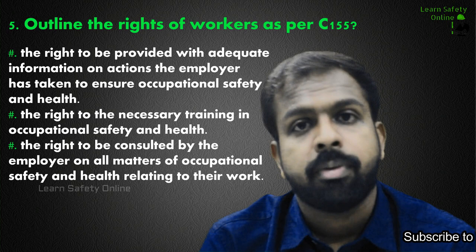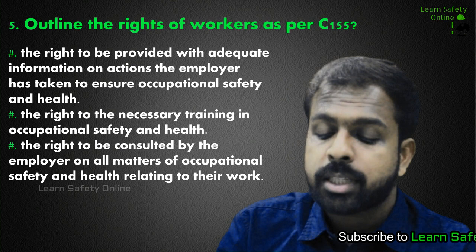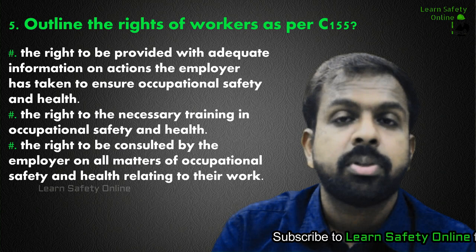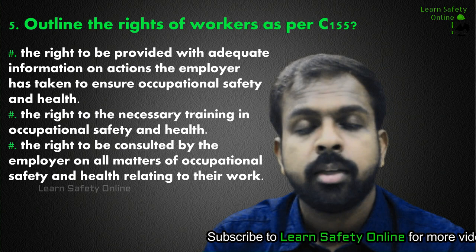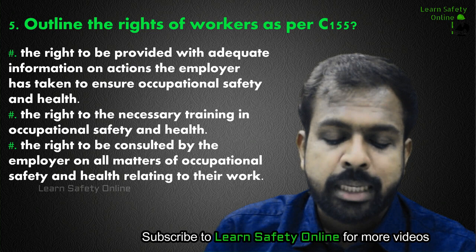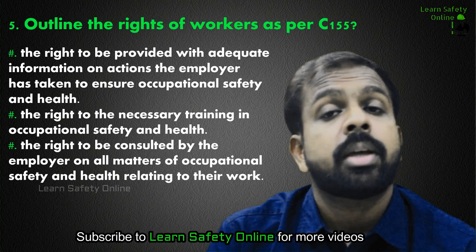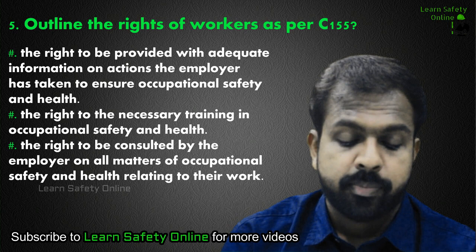Our next question is the basic rights of workers as per Convention 155. The first right is to be provided with adequate information on actions the employer has taken to ensure occupational safety and health — workers have the right to know what actions an employer is taking. The second right is to receive the necessary training in occupational safety and health.